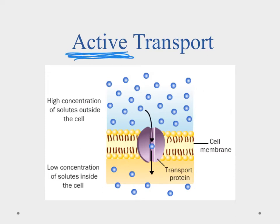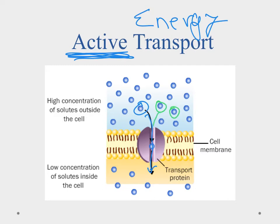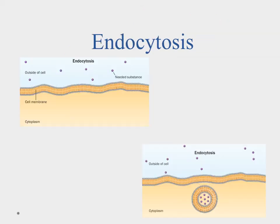Sometimes diffusion isn't enough, and then we talk about active transport. Active transport means we are using energy to move particles across the transport protein. With active transport we can move molecules even from a low concentration to a high concentration — going against the concentration gradient.